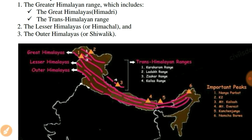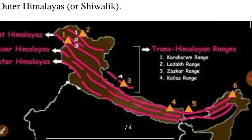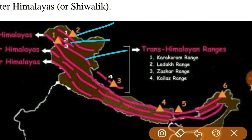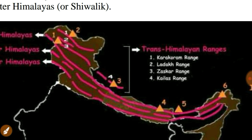Himalayan ranges other than these three are called Trans-Himalayan ranges. I will show these in the map. You need to remember these four Trans-Himalayan ranges in order from north to south — it will help for map-based location questions. First is the Karakoram range in the north, then the Ladakh range below it, then the Zaskar range, and finally the Kailas range which is an extension of the Zaskar range.